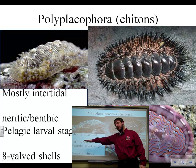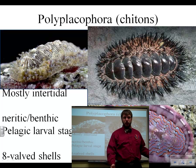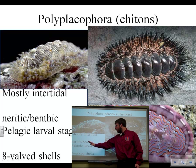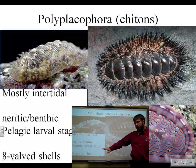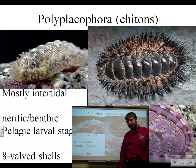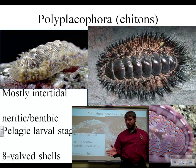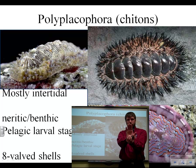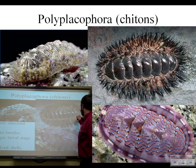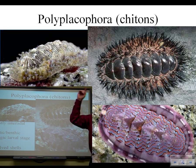Most chitons live in those intertidal zones — those shallow estuary-type places where the water goes in and out frequently. They tend to be neritic or benthic. However, many of them are free-swimming and pelagic when they're in the larval stage. They are marked by an eight-valved shell. Compare that to bivalves like clams, which have only two valves. Chitons have eight — they look crazy.